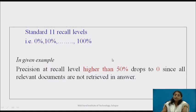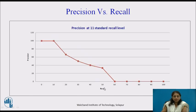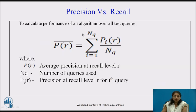There are 11 standard recall levels: 0%, 10%, up to 100%. In this example, precision at recall levels higher than 50% drops to 0 since all relevant documents are not retrieved in the answer set. If we plot the graph, this is the precision-recall curve for the given example at 11 standard recall levels.